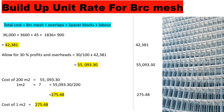The total cost includes the BRC mesh, overlap, spacer blocks, tying wire, and labor. That is 3,600 plus 3,600 plus 45 plus 1,836 plus 900 plus 45, giving us a total of 42,026 shillings approximately. We allow for 30 percent for profit and overheads, bringing the total cost for 200 square meters to 55,093.30 shillings.